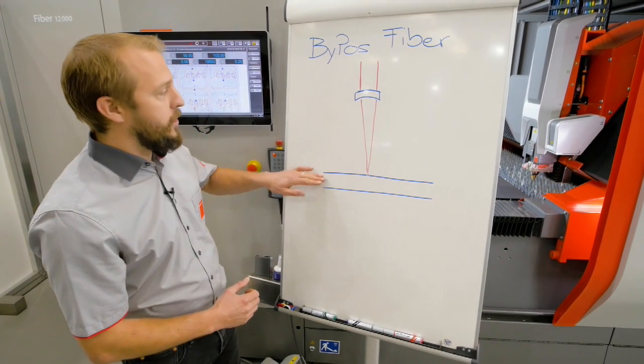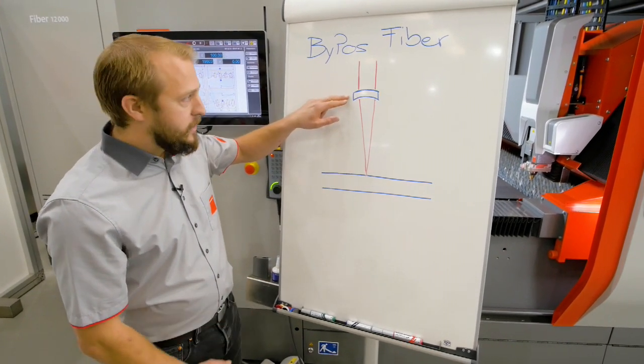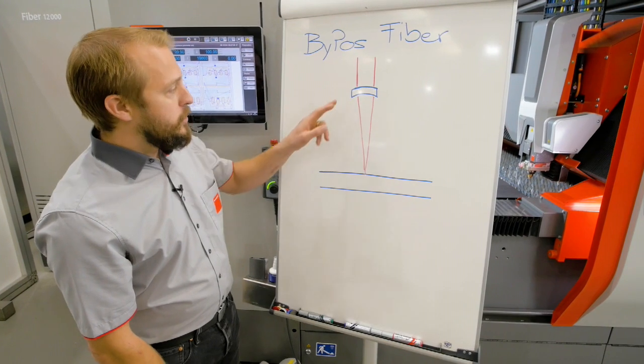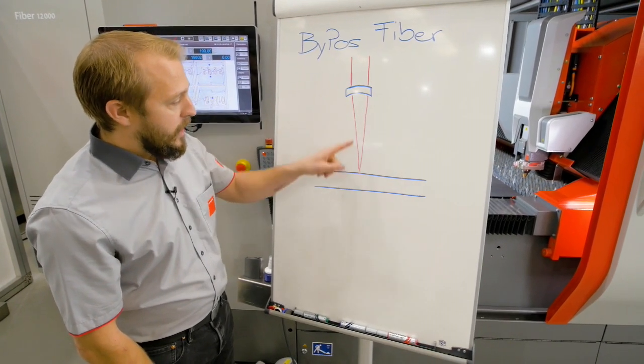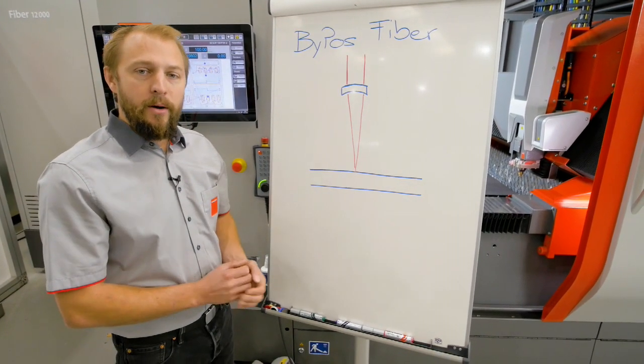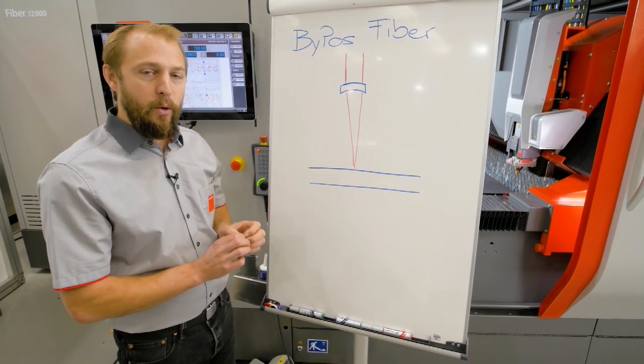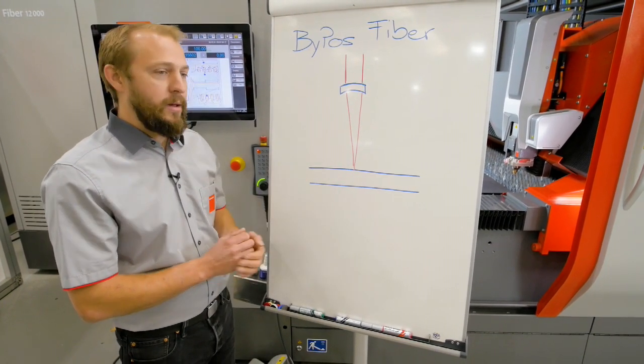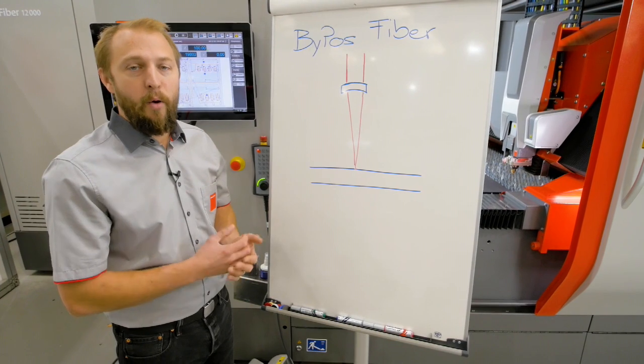Here we have our material, here we have our lens, and here our beam. The beam is going through the lens, being put here on a very small spot. We call this the focal point. That's where we have the highest density of energy.